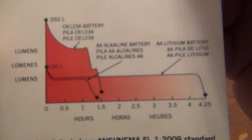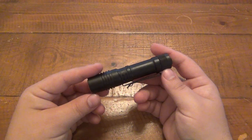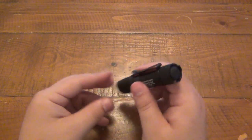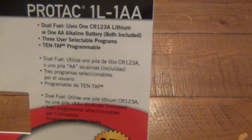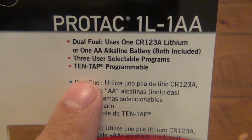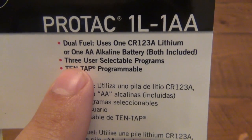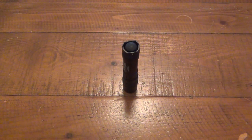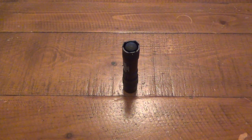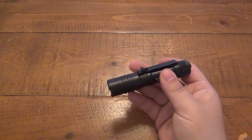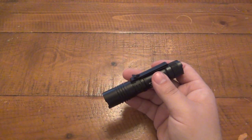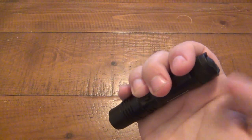You can see on the back here, they have a nice little chart to show you the difference between the 350 lumens and the 150. So let's go over the different user interfaces. Now, as we notice on the package here, it says that this has 10-tap programmable technology. What is that? There's three user selectable programs. There's basically three different user interfaces. There's three different setups for the features on this flashlight.